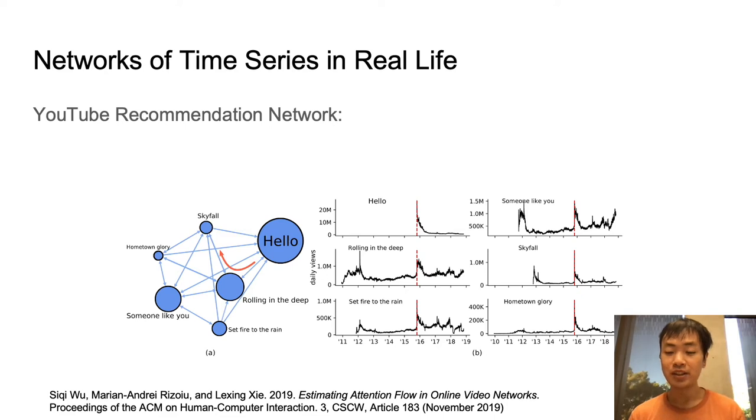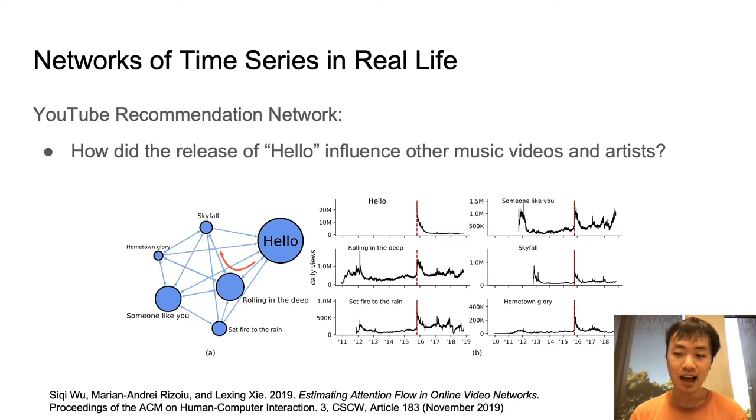And again, each node is associated with a time series. One use case came from a prior work in our research group done by Siqi Wu and others, where we consider the event marked with a red vertical line. This was when Adele released her new song Hello back in 2015. And an interesting question is, how did the release of this new song affect the popularity of Adele's other songs and also the popularity of other artists?